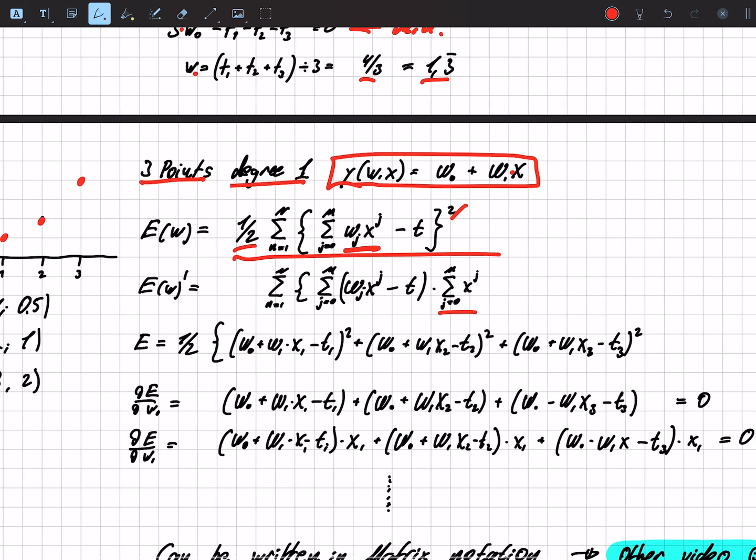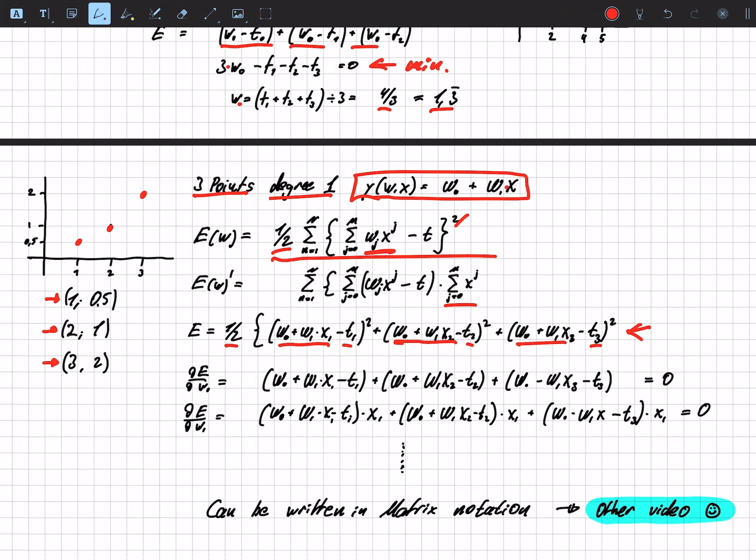So written out, we have this function, so we have a half, this is our polynomial minus t plus the polynomial again minus t, in this case t1 and t2, and then we have again the polynomial minus t3.